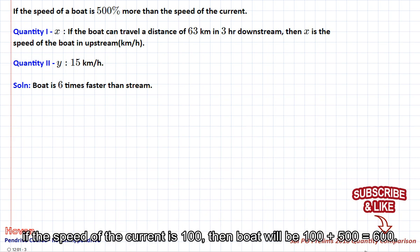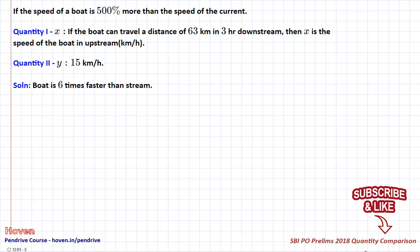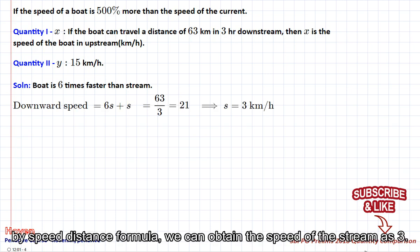If the speed of the current is 100, then boat will be 100 plus 500 equal 600. So the boat travels 6 times faster. By speed distance formula, we can obtain the speed of the stream as 3.